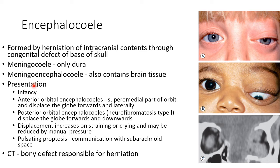Coming to the presentation of a case of encephalocele, it usually presents in infancy. In case of anterior orbital encephaloceles, there will be involvement of the superomedial part of the orbit, and this displaces the globe forwards and laterally, as you can see in this picture. Posterior orbital encephaloceles, which are usually seen in cases of neurofibromatosis type 1, displace the globe forwards and downwards. The displacement increases on straining or crying and may be reduced by manual pressure. There will be pulsating proptosis because of the communication with the subarachnoid space.